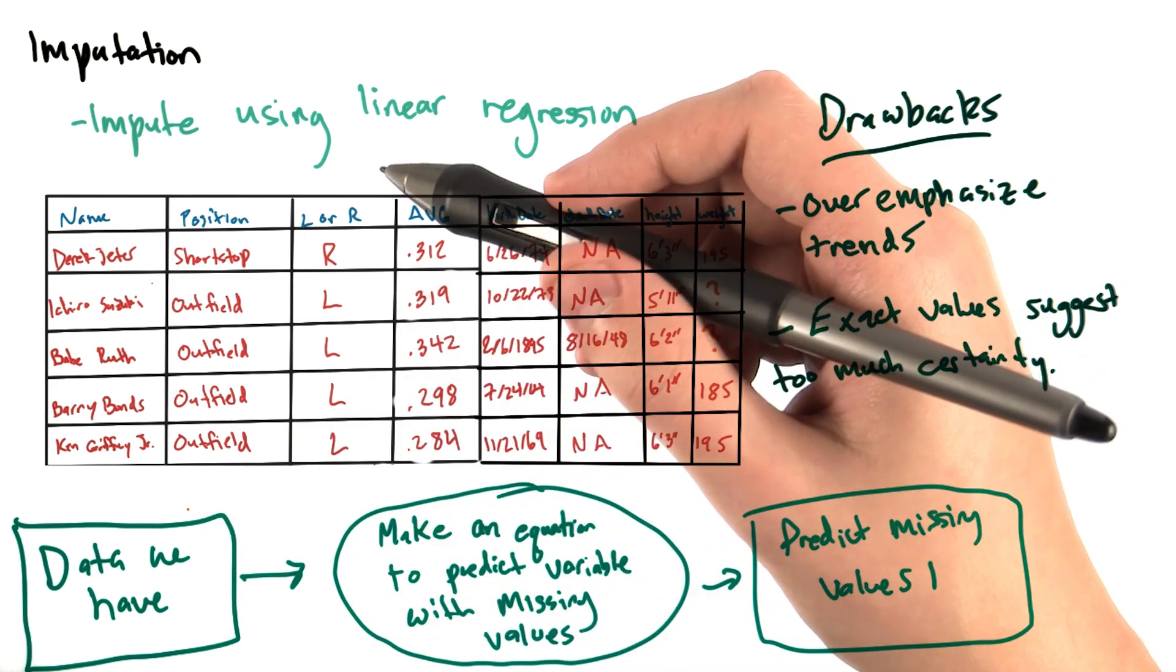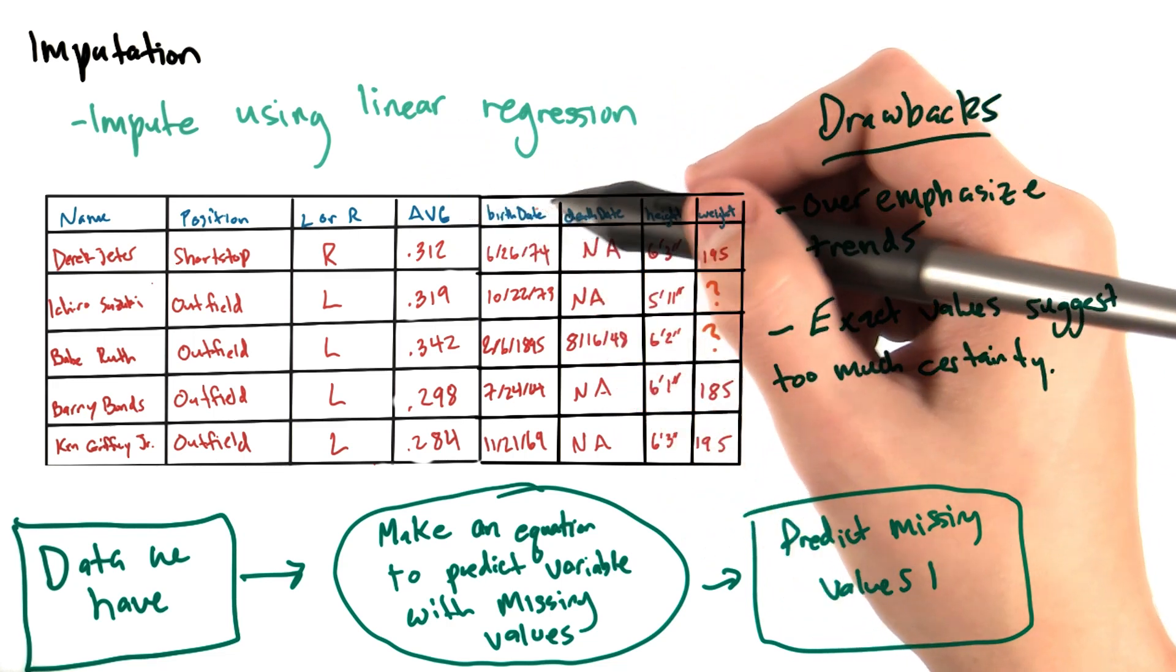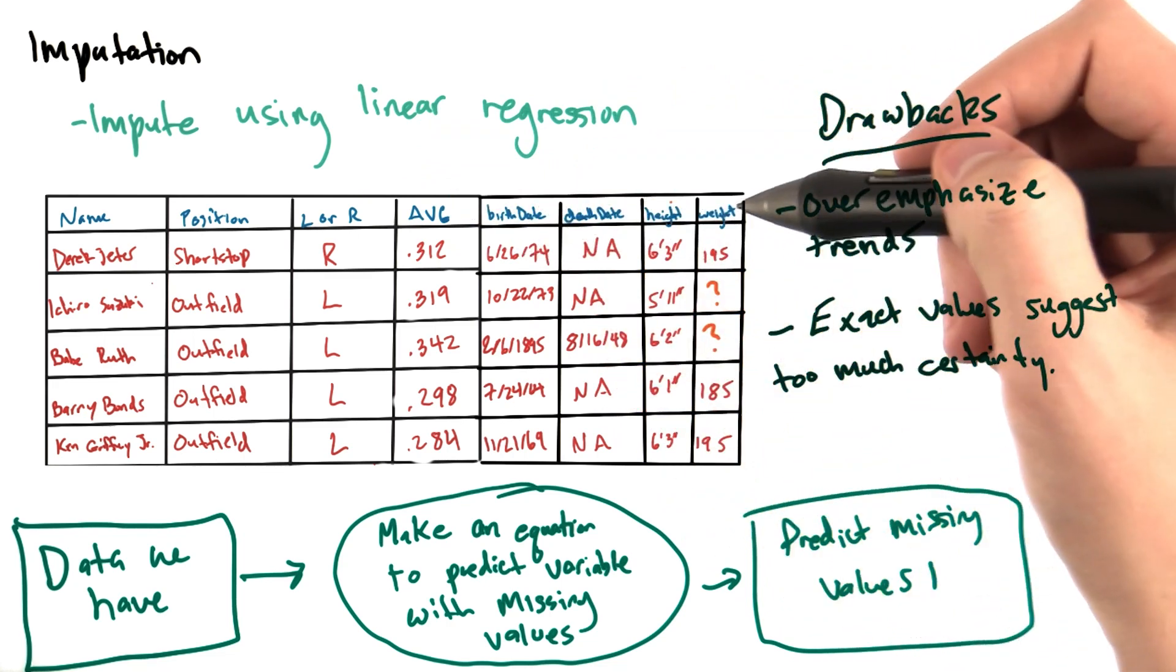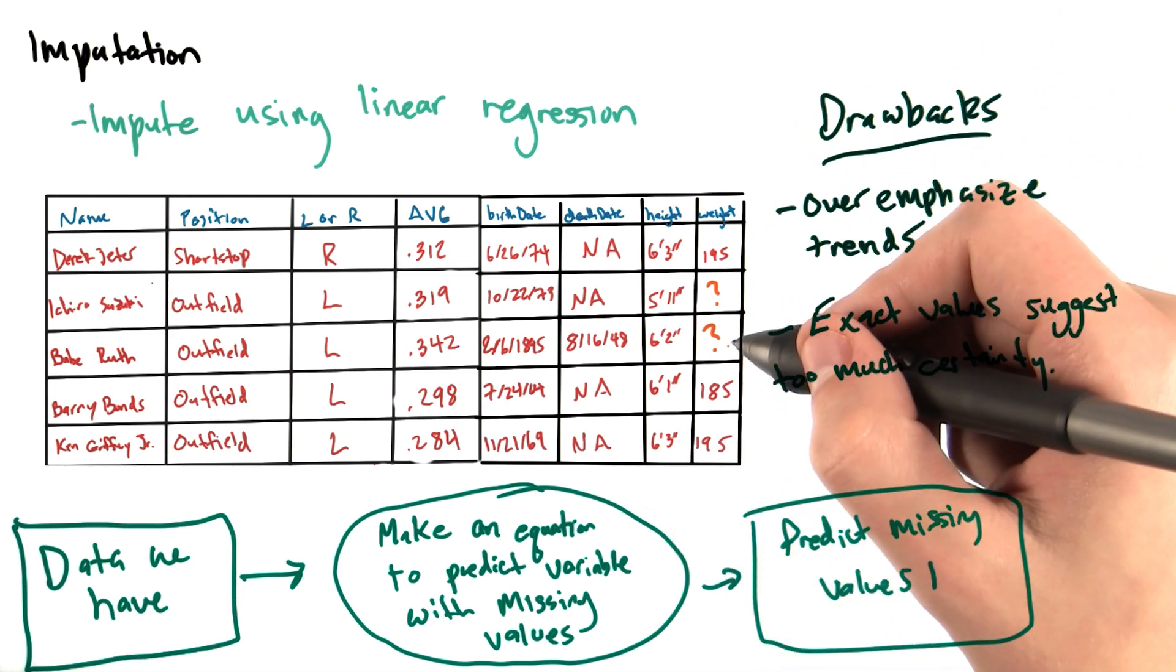That is, entries that have position, left or right handed batter, average, birth date, death date, height, and weight. We then use that model we've created to fill in the missing values.